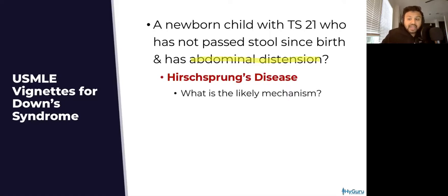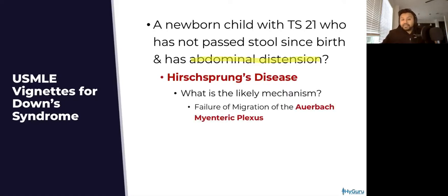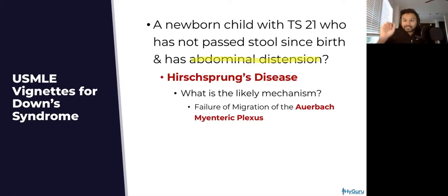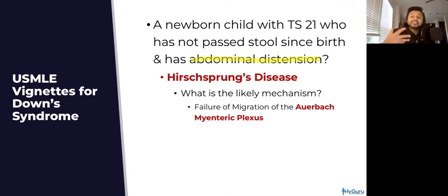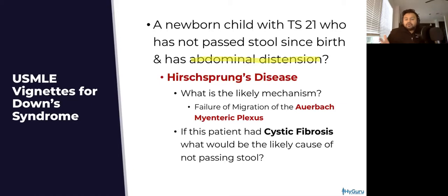Hirschsprung's disease is due to what mechanism? It is a failure of migration of the Auerbach's myenteric plexus. The USMLE loves to test this mechanism because there's a histological integration we're going to get to. Now let's transition this vignette.